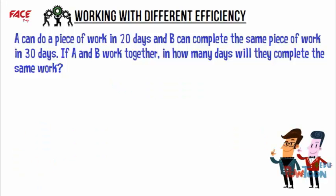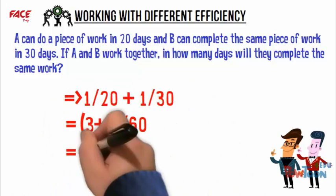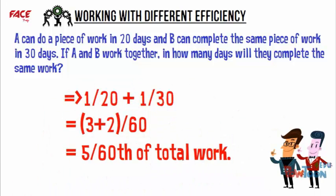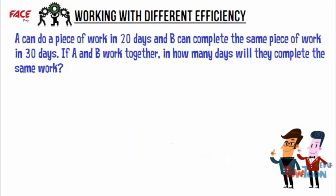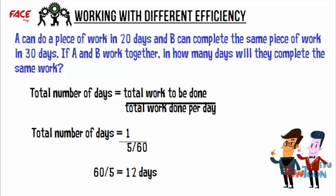Thus, when working together, they complete 1/20 + 1/30 of the entire work. On simplifying, 5/60th of total work will be completed in one day. Therefore, to complete the total work A and B take 1 ÷ (5/60), which is 60/5, that is 12 days.